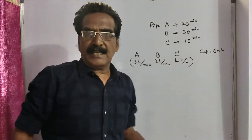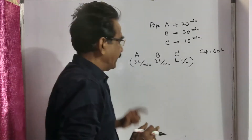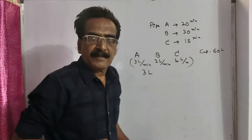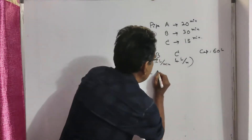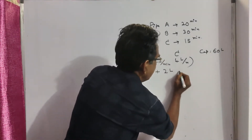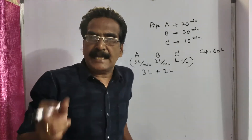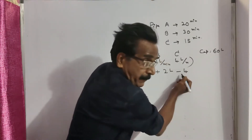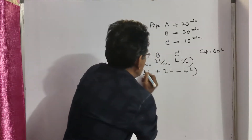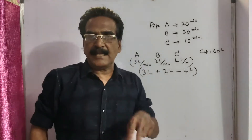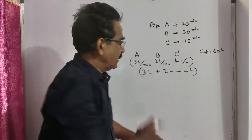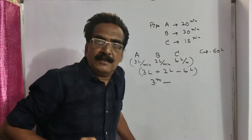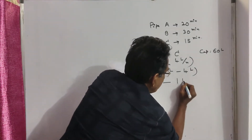So, if these three pipes are kept open for 1 minute successively: in the first minute, pipe A fills 3 liters; in the second minute, pipe B fills 2 liters; and in the third minute, pipe C empties 4 liters per minute — I am putting a minus sign here because it is an emptying pipe. So, in a cycle of 3 minutes, 3 plus 2 minus 4 equals 1 liter of water is filled.